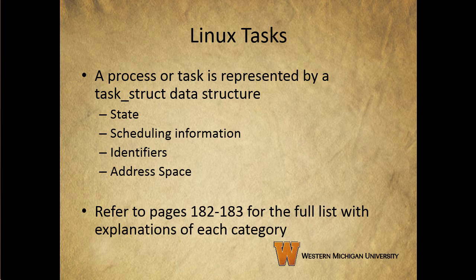We have identifiers, which include a unique process identifier and also user and group identifiers. The group identifier is used to assign resource access privileges to a group of processes. Another thing contained in the task_struct is the address space, which is the virtual address space available to the task. Take a look in your book at pages 182 and 183 for the full list of information in the task_struct data structure and explanations of each type of information.